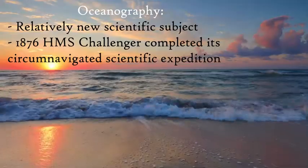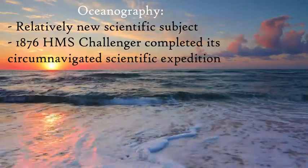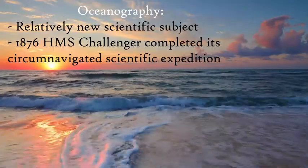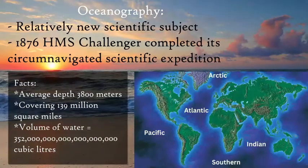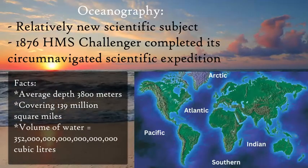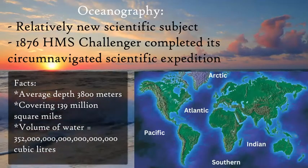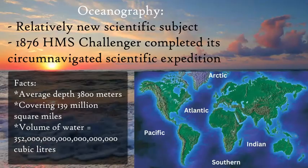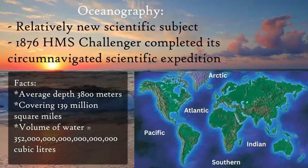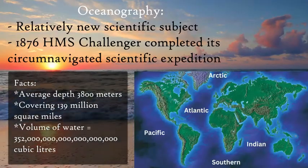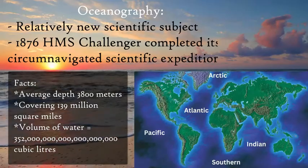The oceans are huge and massive. The Pacific Ocean by itself can contain all the land masses on Earth with room to spare. It covers 71% of the Earth's surface and has an average depth of 3,800 meters.